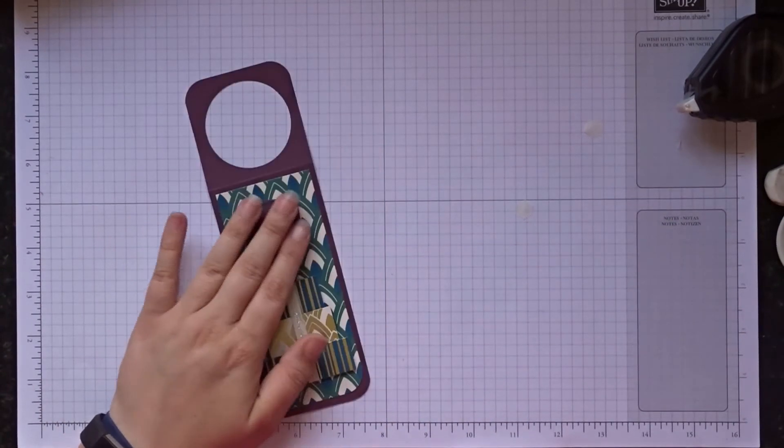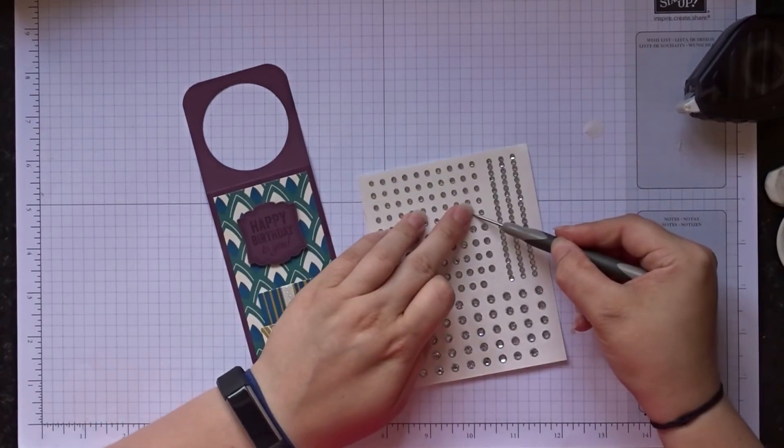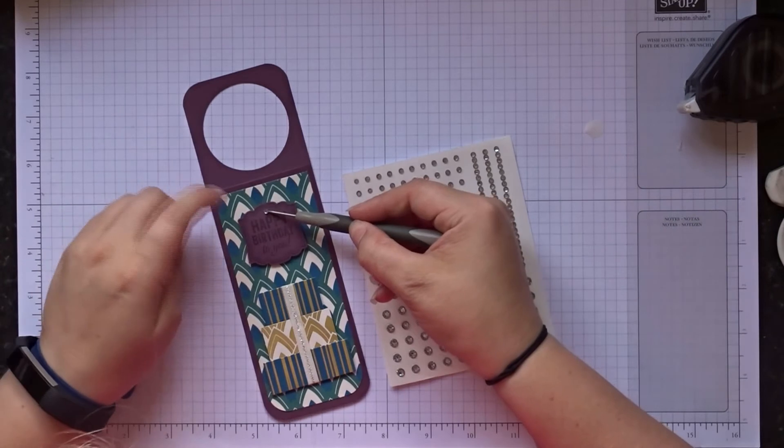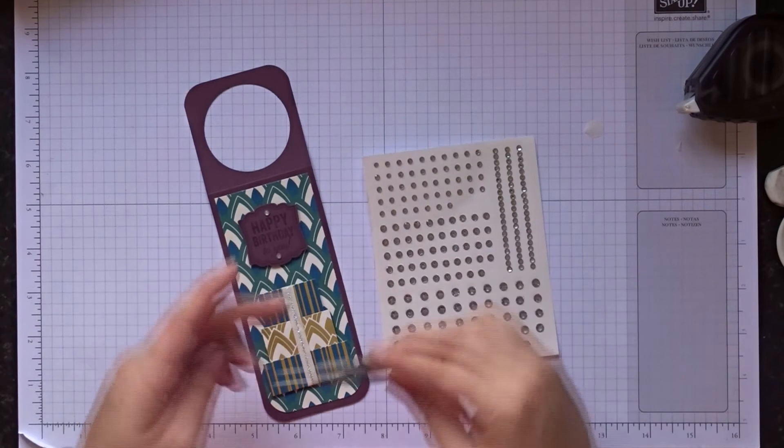Okay, and then to match the box I've done, I'm just going to add a couple of embellishments. You can never have too many. Not in my opinion anyway. I'm just going to add one at the top and one at the bottom. Just there.